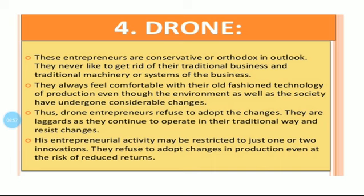Here is a summary of the four classifications by Clarence Danhoff. First is Innovative Entrepreneurs — they have innovations and apply them to their business. Second is Adoptive Entrepreneurs — they adopt ideas from Innovative Entrepreneurs. Third is Fabian Entrepreneurs — they are traditional and will only adopt changes when facing loss. Fourth is Drone Entrepreneurs — they will not adopt changes and follow traditional methods throughout.